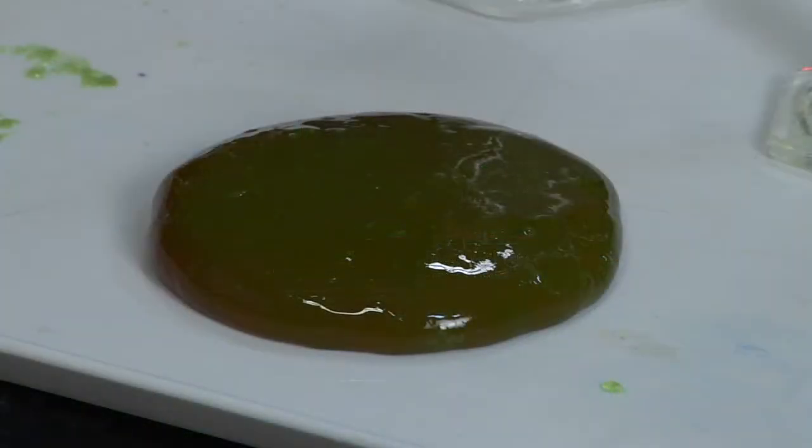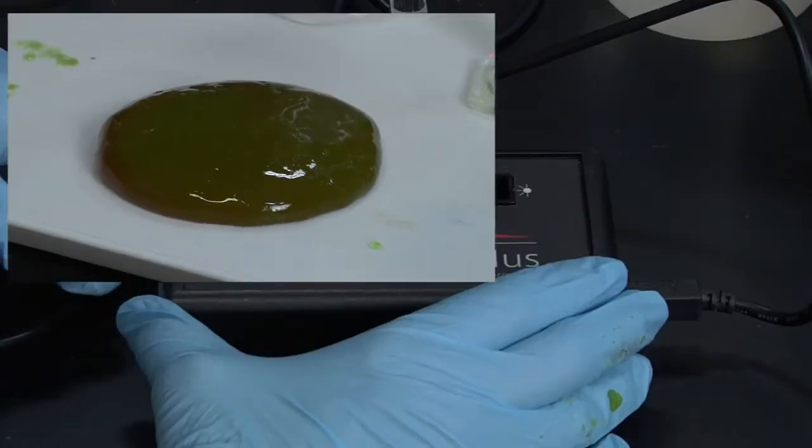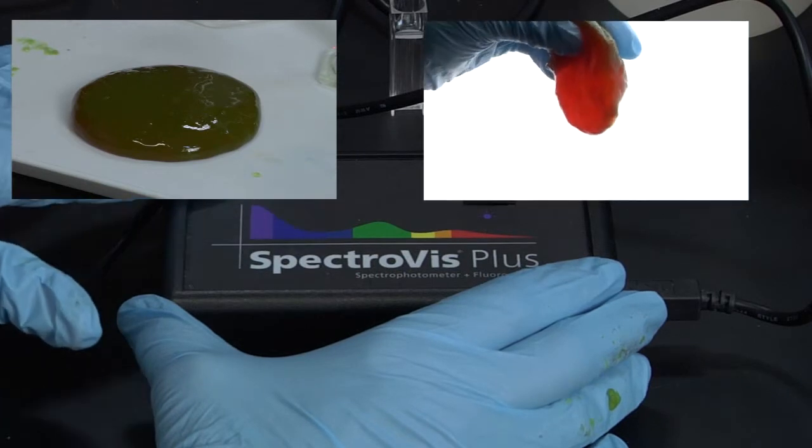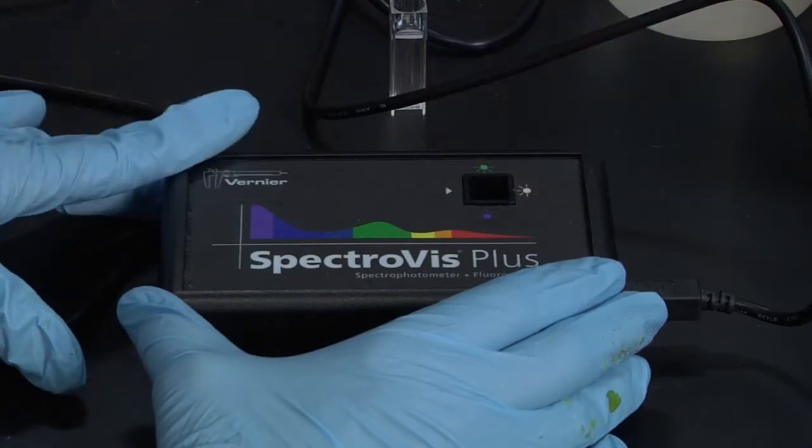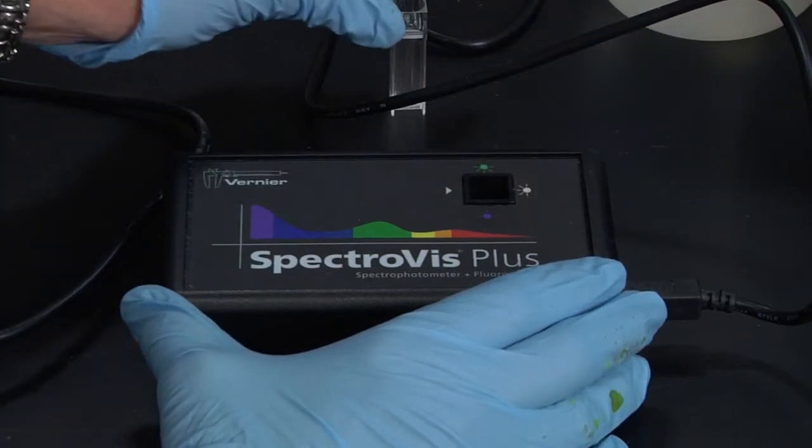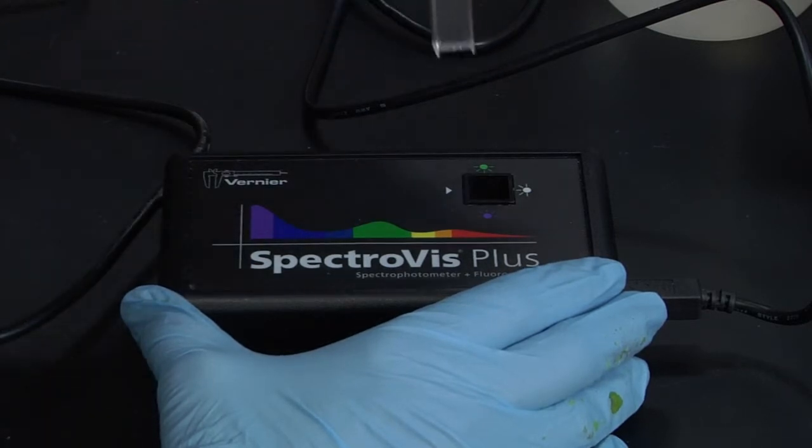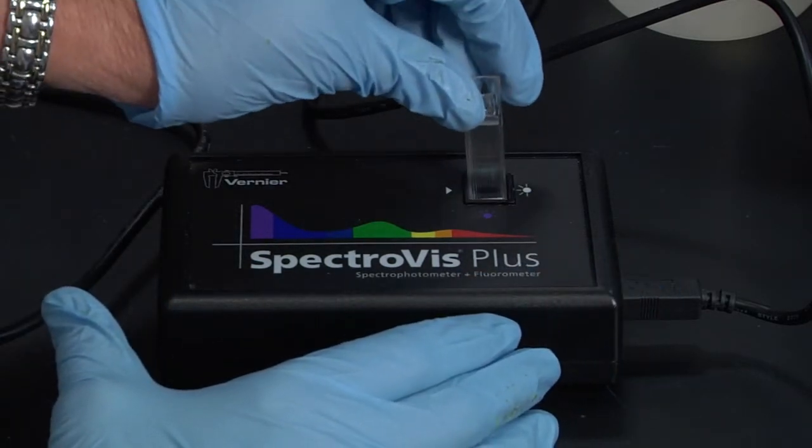So if you remember our slime, we had looked green in one place and then looked red in another. So the way the SpectroVis works is there's a light source here, we have a cuvette, and we put our sample here.